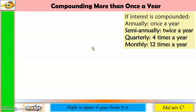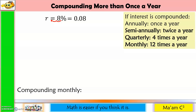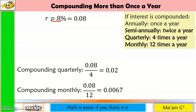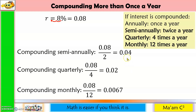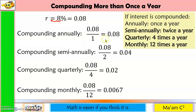The interest rate is equivalent to 0.08. Compounding monthly means applying the interest rate 12 times a year, but it doesn't mean 12 times of 8%. The 0.08 will be divided by 12, and the result is the interest rate applied 12 times. For compounding quarterly, 0.08 divided by 4 equals 0.02, applied 4 times a year. Semi-annually: 0.08 divided by 2 equals 0.04, applied twice a year. Annually: 0.08 divided by 1 is still 0.08, applied once a year.